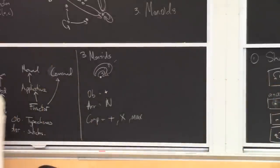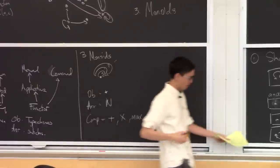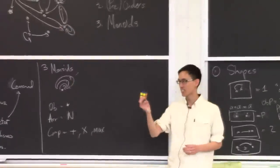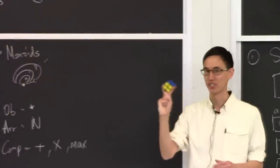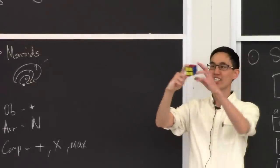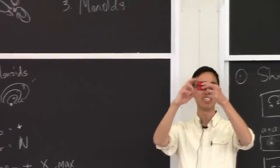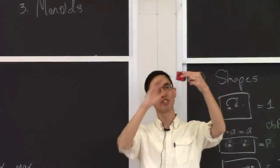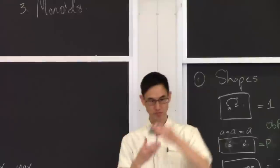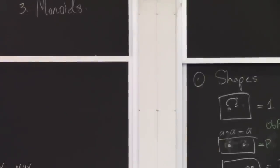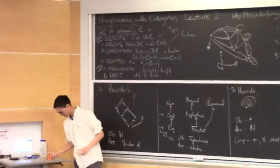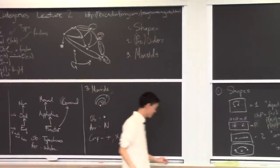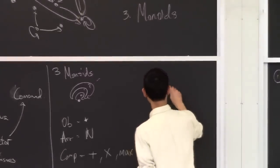This idea of a monoid is very fundamental, and part of this point is to show how flexible the notion of a category is. Looking around the house for an easy example of a category, I found a Rubik's cube. This is a category with one object, and the arrows are just operations on the Rubik's cube. I can compose them because the result is also an operation on the Rubik's cube. So a Rubik's cube is another example of a monoid — in fact, it's a group.